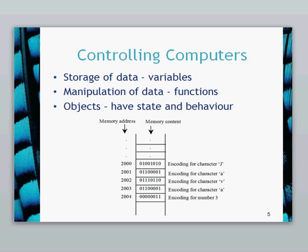So the storage of data — again, in memory you can store any kind of data as long as it can be represented by zeros and ones ultimately. Text files, PowerPoints, videos, anything — any data is stored effectively as zeros and ones. Any data stored in memory in programming languages we call variables. So variables are something you're going to work with a lot in this course — they are effectively just a storage area in memory.